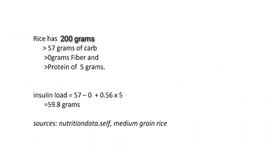For example: 200 grams of rice, equivalent to 1 cup, contains 57 grams of carbs, zero fiber, and 5 grams of protein based on nutrition data. Applying the equation: insulin load = 57 minus 0 plus (5 × 0.56) = 59.8 grams. That is the insulin load for one cup of rice. You may ask: what are the right parameters for insulin load?